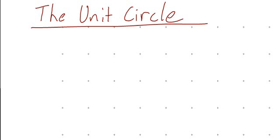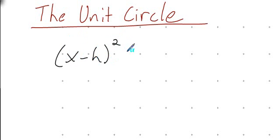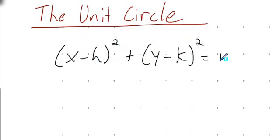Hello and welcome to IzzoMath. Today we're going to be talking about the unit circle. Let's first go back to the basic equation of a circle. We know that the basic equation of a circle is x minus h quantity squared plus y minus k quantity squared equals r squared. This gives us the equation of any circle with any center (h, k) and radius r.